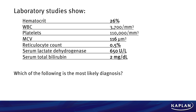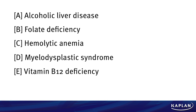So we've got some abnormal labs in this guy with generally no past medical history. What's going on? This question wants to know what's the diagnosis. Is it: A) alcoholic liver disease, B) folate deficiency, C) hemolytic anemia, D) myelodysplastic syndrome, or E) vitamin B12 deficiency? Take a few moments and select what you think is the best answer.